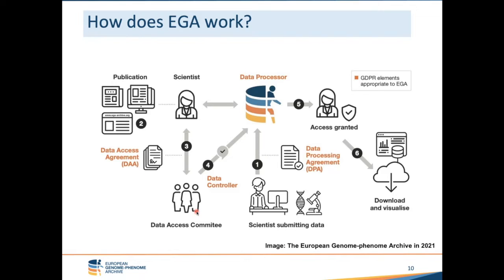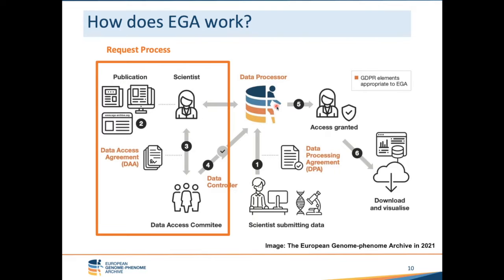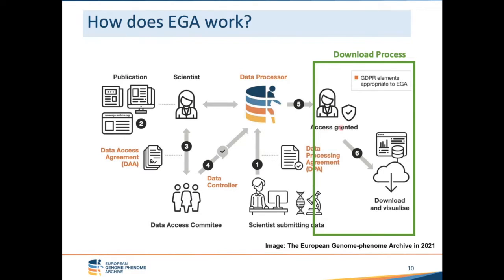There are three main processes at EGA. The first is the submission process, which happens when a research group has generated human data and wants to submit it to EGA. The second is the request process, where a researcher finds data on EGA, is interested in it, and contacts the DAC — the data access committee — who evaluates their request and grants access. Finally, once access is granted, the researcher can download the data from EGA.